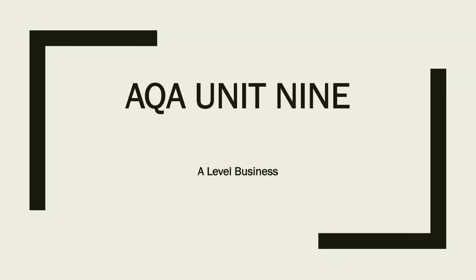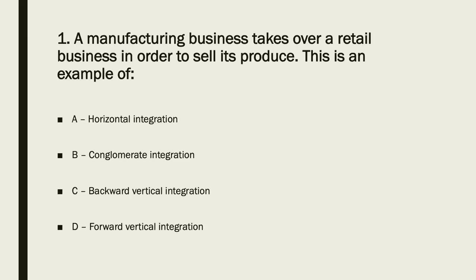AQA Unit 9, A-level Business. Question one: a manufacturing business is taking over a retail business — moving from the secondary sector, taking over a business in the tertiary sector. Therefore it has to be some form of vertical integration, not horizontal, not conglomerate. Moving up the supply chain through the sector means it has to be forward vertical integration. The answer to one is D.